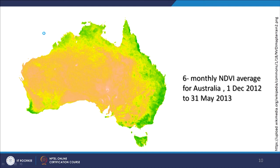Looking at products from NOAA AVHRR data, a 6-month average NDVI for Australia from 1st December 2012 to 31st May 2013 shows that on the north and east coasts there is good healthy vegetation, while the remaining parts — except the southwest corner — are almost desert. This demonstrates that both daily and averaged NDVI products can be created to assess vegetation conditions.